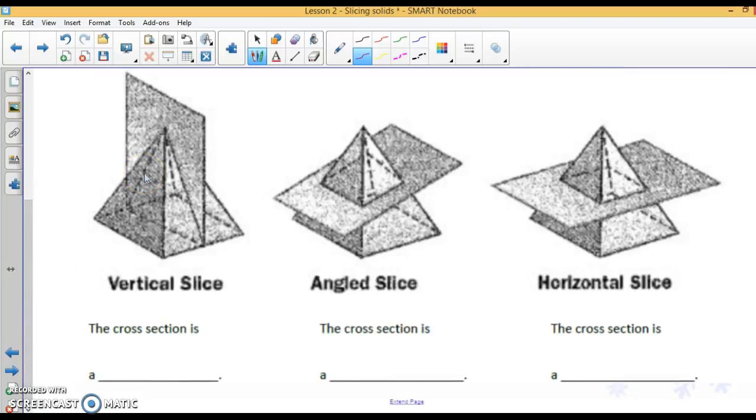If we do a slice vertically—vertically is straight down through. Vertical goes up and down. Horizontal goes left and right. So this would be a triangle.